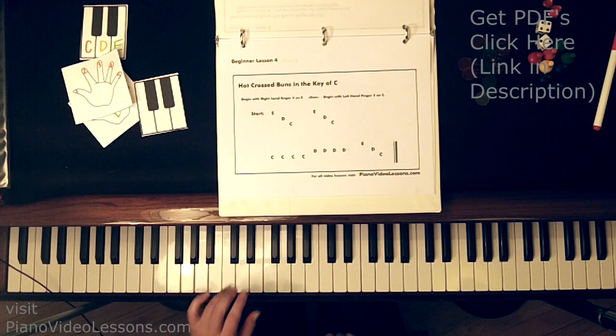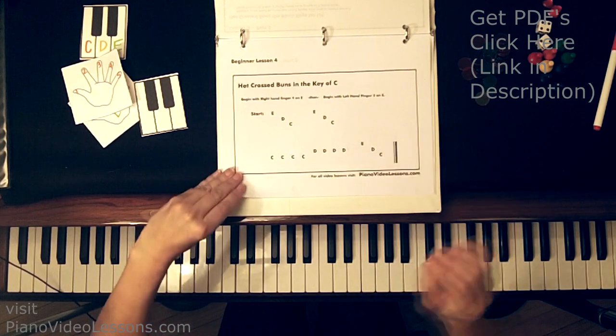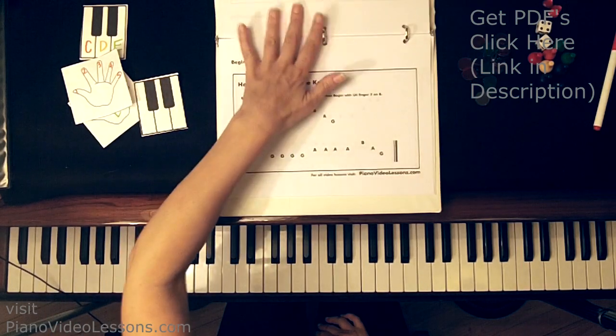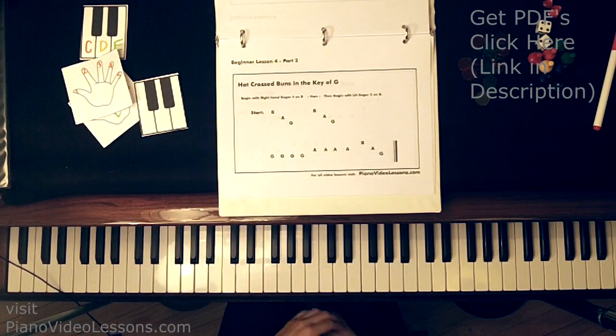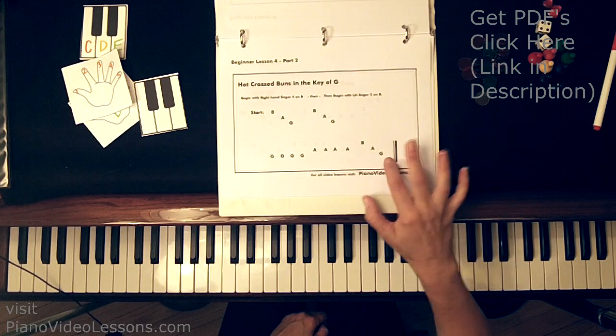So this was in the key of C because the home note or the finishing note is C. So now let's also learn to play hot cross buns in the key of G. So if we finish on C in the key of C, guess which note we finish on in the key of G. Yes, we finish on G.